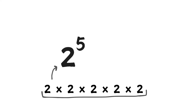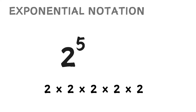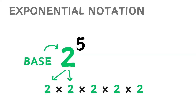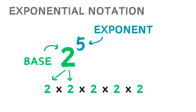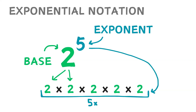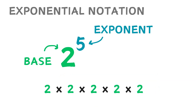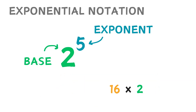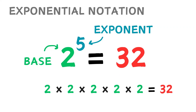An alternative way we could write this expression is using exponential notation. The larger number, called the base, tells us what number is being used as factors. The exponent is the small superscripted number to the upper right — it tells us how many times we multiply the base. If we evaluate 2 to the 5, we get 2 multiplied 5 times, which simplifies to 32.